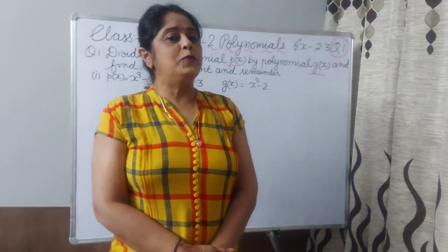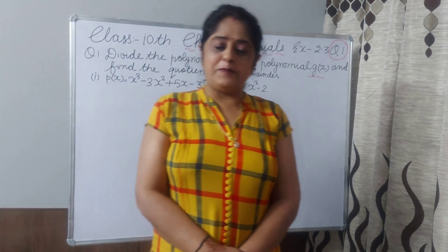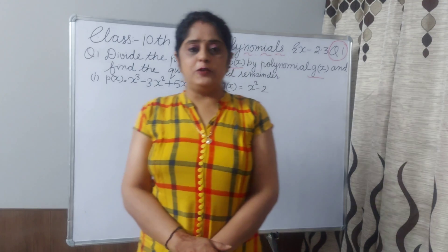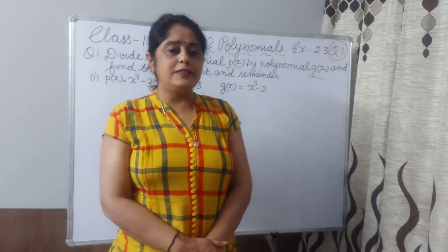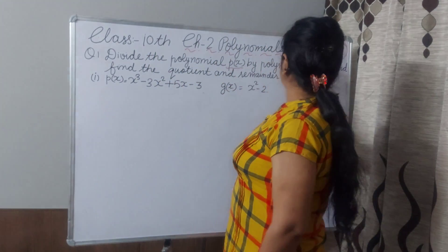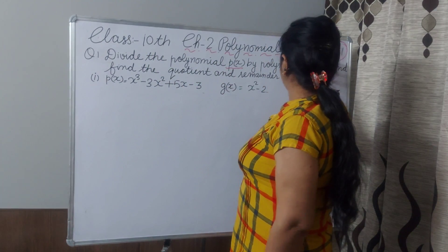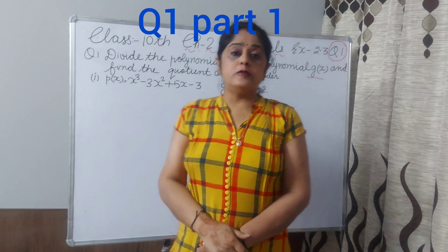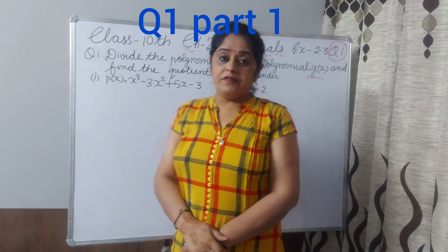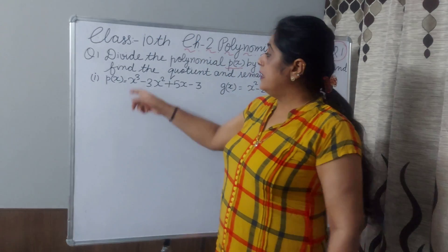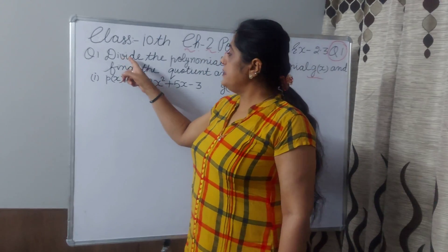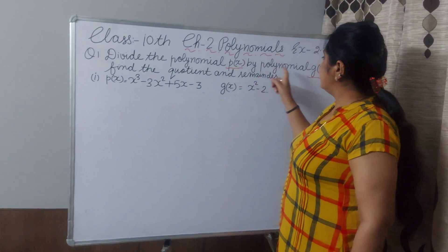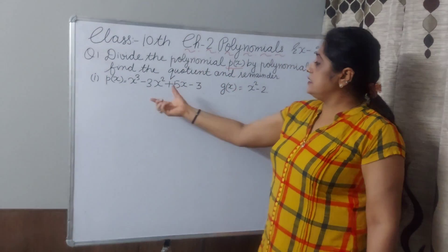Hello everyone, today I will explain for class 10 chapter 2 exercise 2.3 question number 1. There are 3 parts of question number 1. First we are solving the first part and the statement is: divide the polynomial P(x) by polynomial G(x).